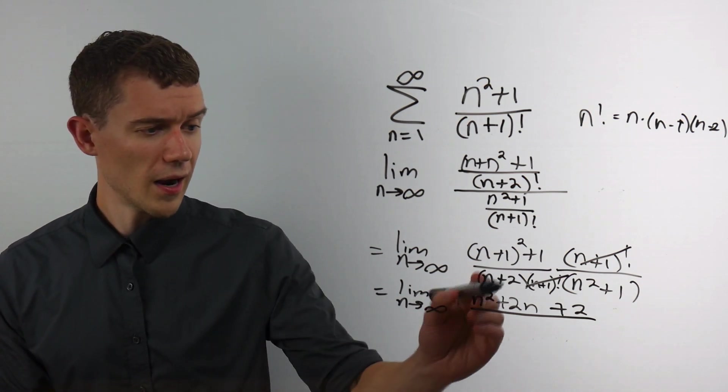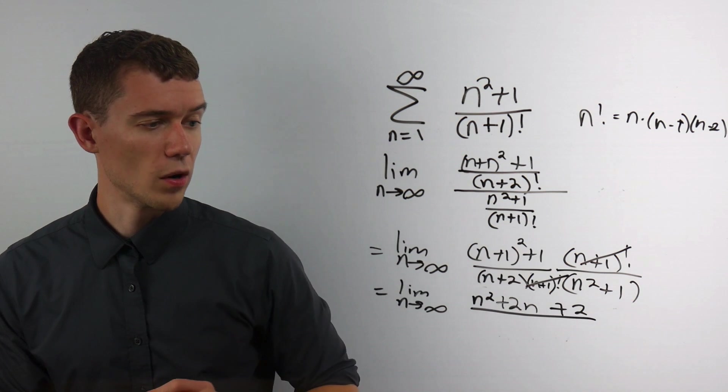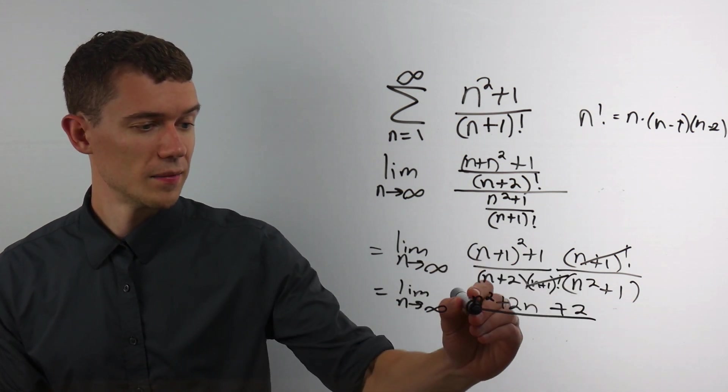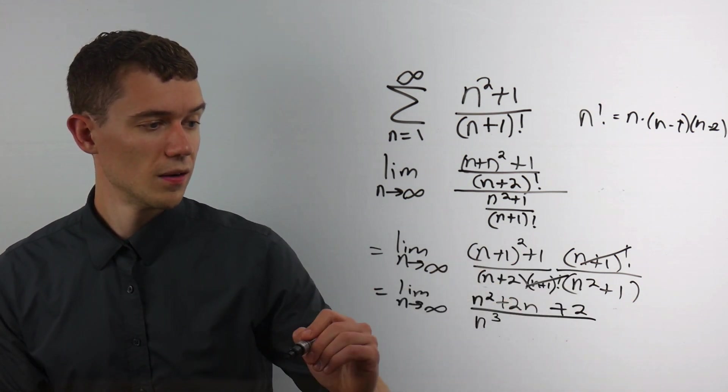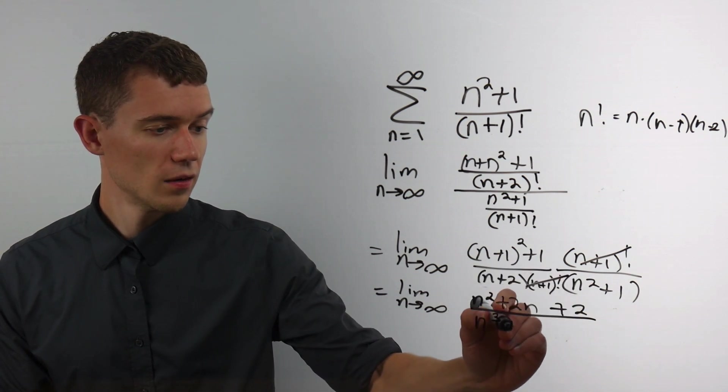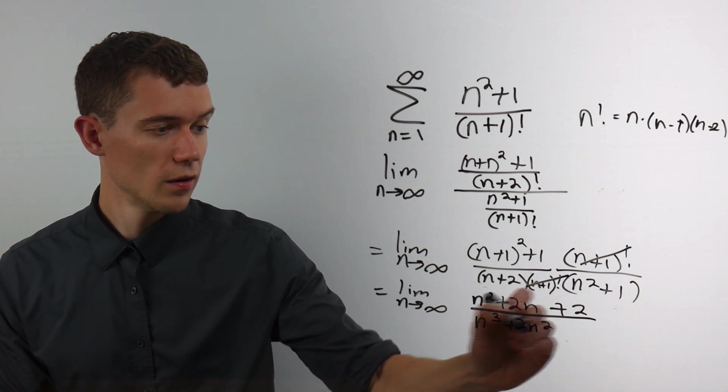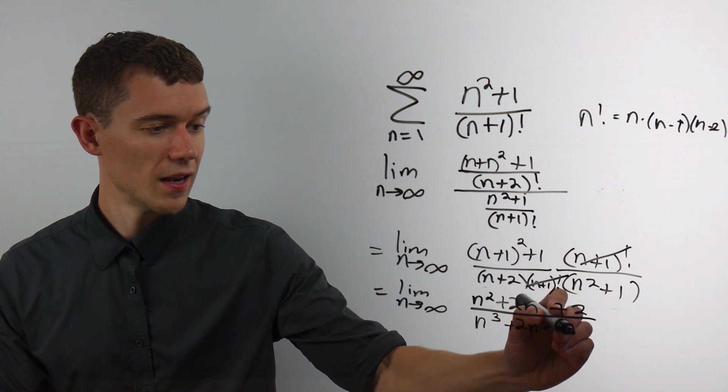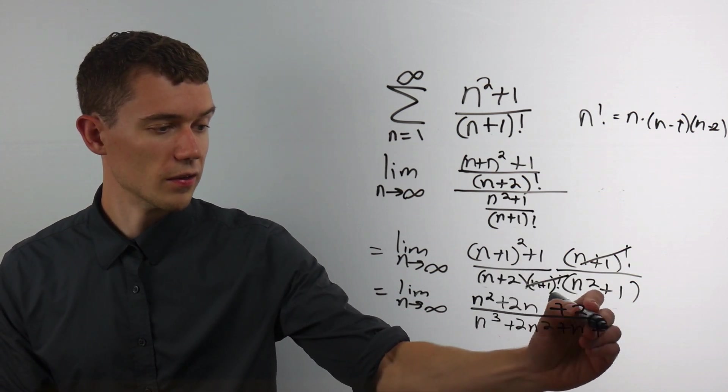On the bottom, I have n plus 2 times n squared plus 1. n times n squared will give us n cubed. I'll have 2 times n squared to give us 2 n squared. I'll have 1 times n to give us n. And then I'll have 2 times 1 to give us 2.